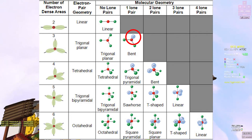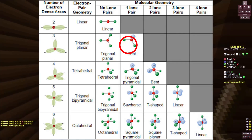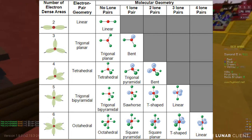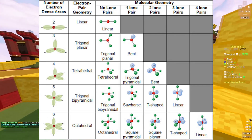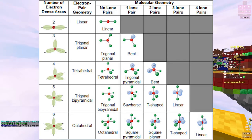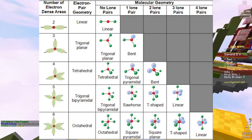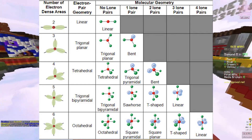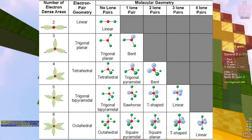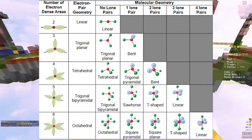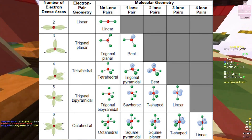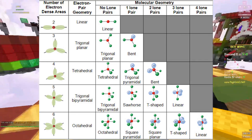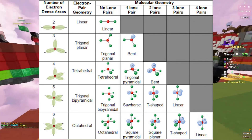If we take out the lone pair and just look at the bonded atoms, the shape looks bent — that's the molecular geometry. In 3D space, we're only looking at the bonded atoms since lone electrons aren't bonded to anything. The electron pair geometry is trigonal planar, but the molecular geometry is bent because the lone pair repulses more, forcing the molecule to bend.